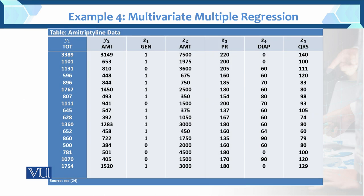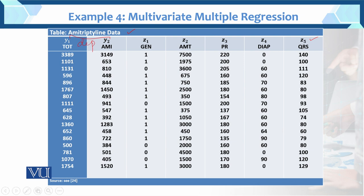This is the amitriptyline data with values for Y1, Y2, Z1, Z2, Z3, Z4, and Z5. So these are the two dependent variables and these five are the independent variables.